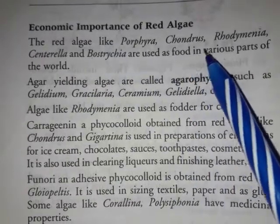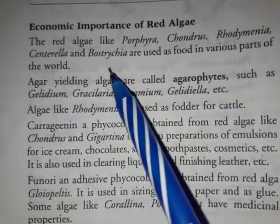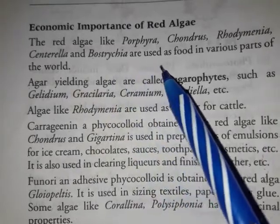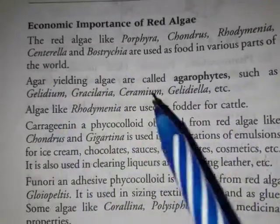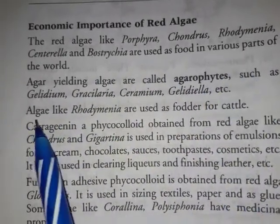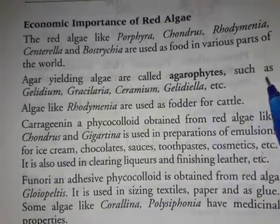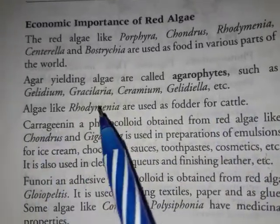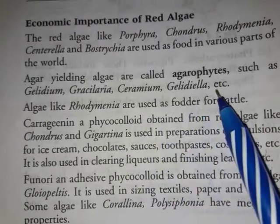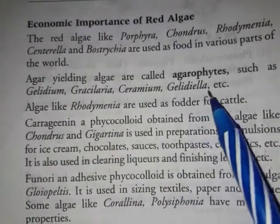Economic importance: red algae used as food in various parts of the world include Porphyra, Chondrus, Rhodymenia, and Centroceras. Agar-yielding algae are called agrophytes such as Gelidium, Gracilaria, Suhria, and Gelidiella.